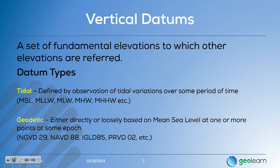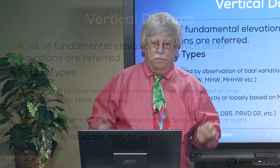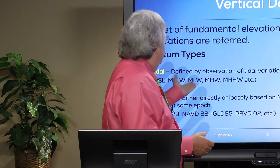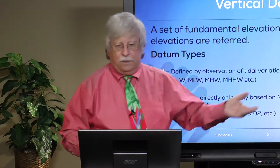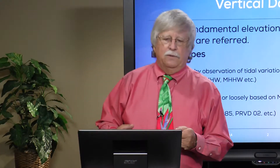Someone comes in, puts a tide gauge in the water, typically off of a large dock. It's there for some period of time, measures the land-water interface for some period of time. From that, you can compute a number of different tidal datums that have a number of different functions. The most commonly known is MSL, mean sea level. You also have mean lower low water, mean high water, and mean higher high water, and we'll go through some of those today.